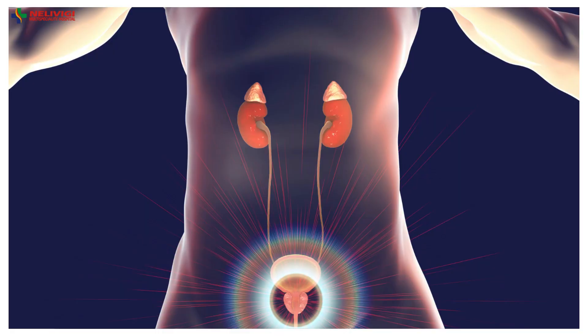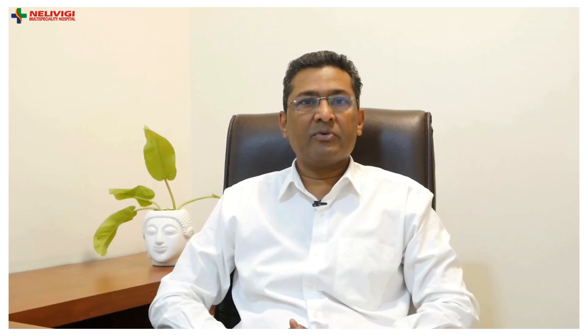Urinary infections could be because of problems in the kidney, the urinary bladder, or the prostate. It could involve infections in other organs, but these are the main organs and I will be discussing them in detail in separate videos. In today's video, I will be talking only of the infections caused due to the kidney. In subsequent videos, I'll be talking of infections because of the urinary bladder and the prostate.